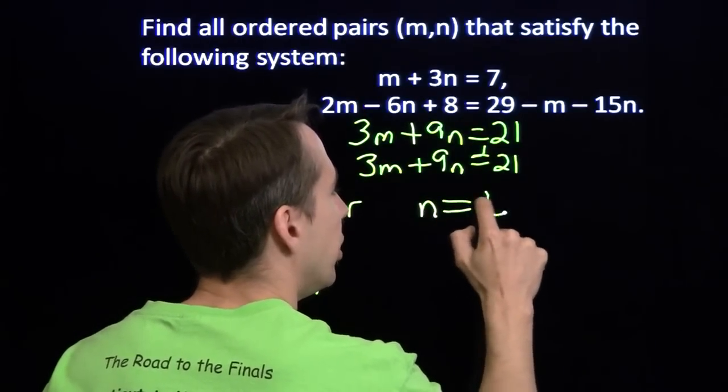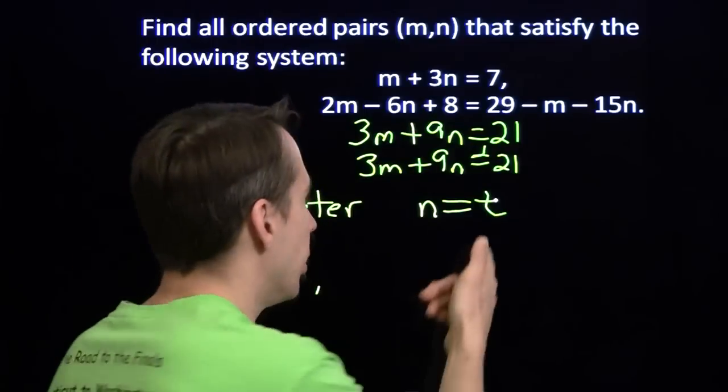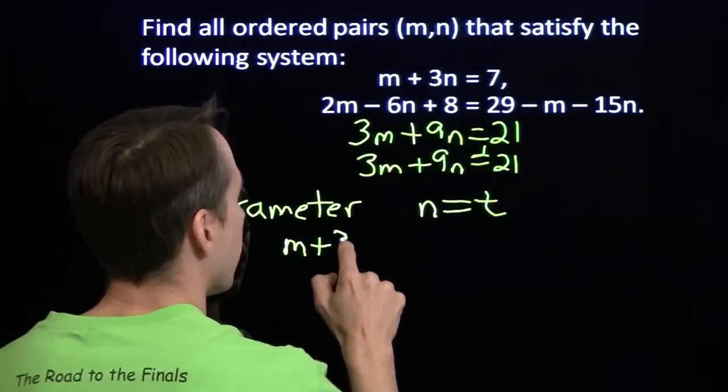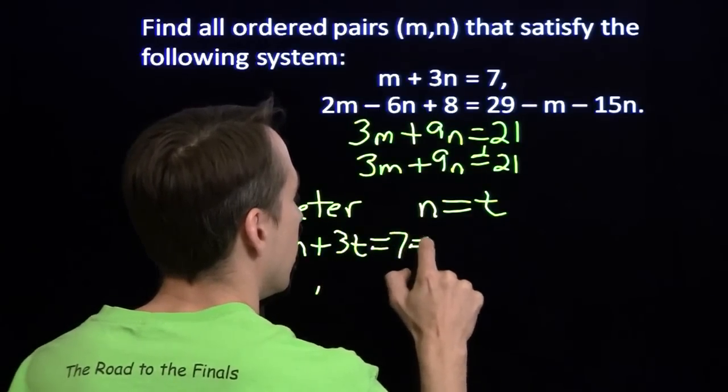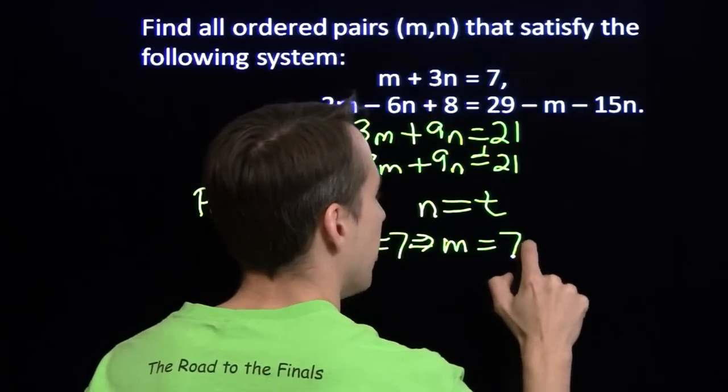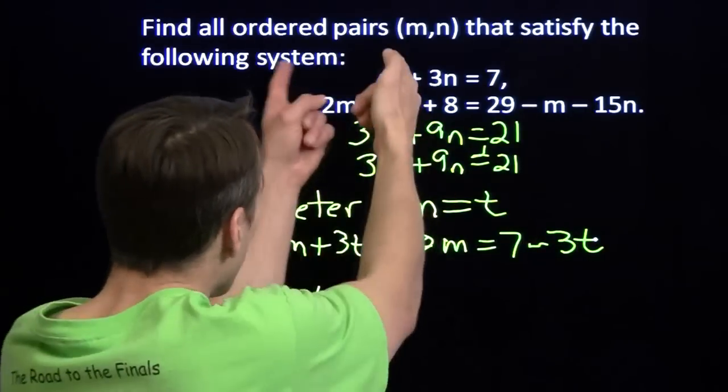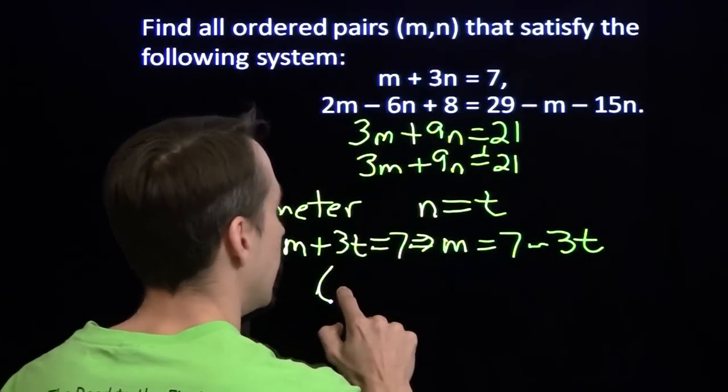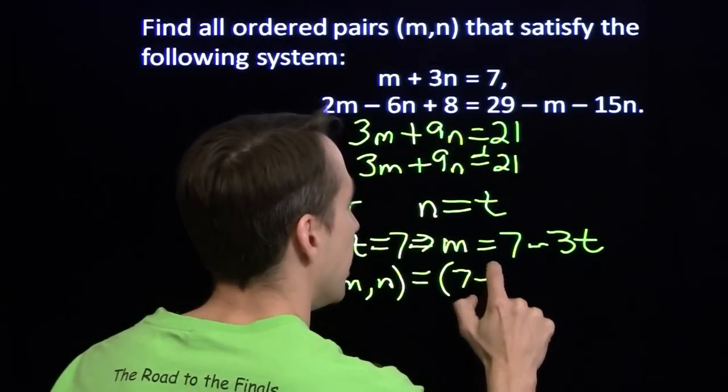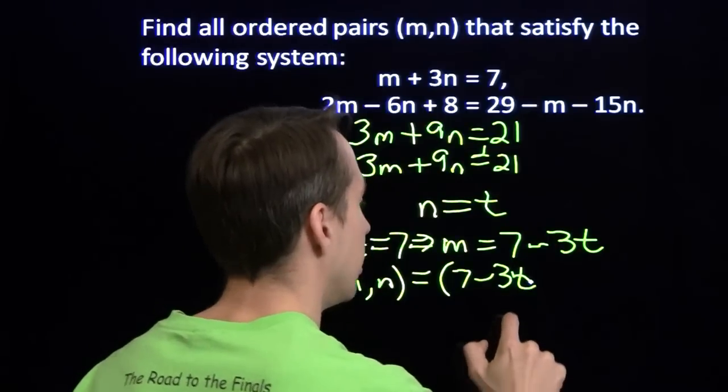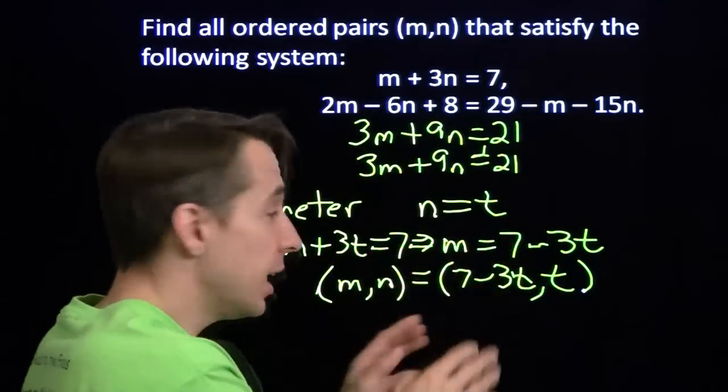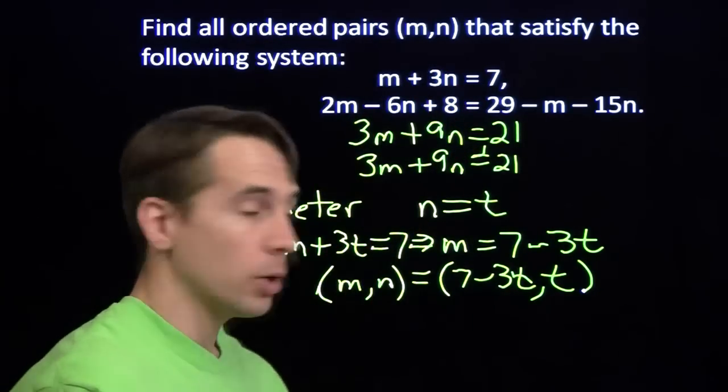So we're going to let n equals t. T, that's our parameter. Now if I let n equals t in this equation, I'll get m plus 3t equals 7, which means m is 7 minus 3t. And the way we can write these ordered pairs is we can write m, n is 7 minus 3t, t. Now whatever I pick for t, I put it in there and I'm going to get a pair that works. It works in both of these equations.